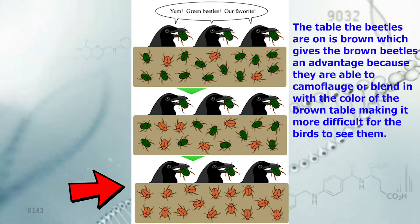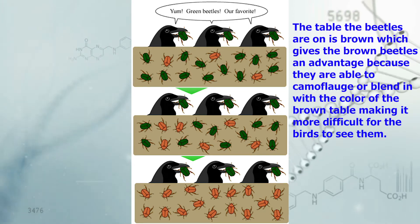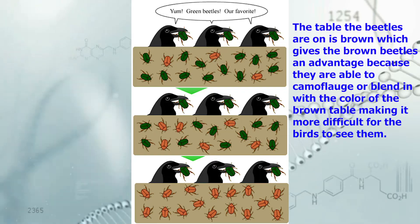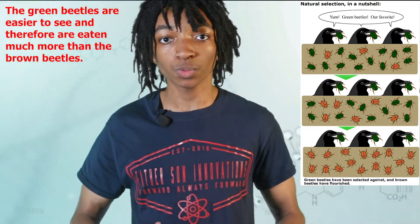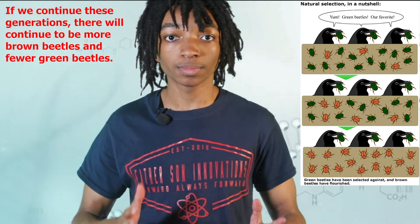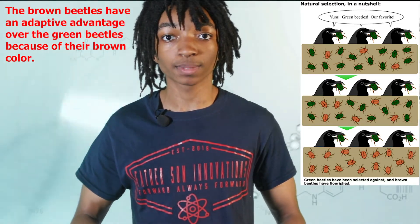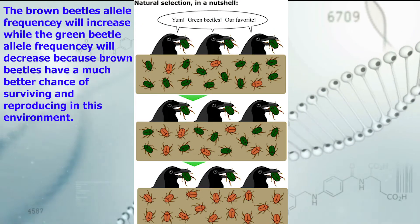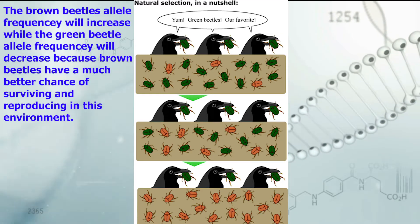One thing you may or may not have paid attention to is that the table the brown beetles are on is brown, which gives the brown beetles an advantage because they are able to camouflage or blend in with the color of the brown table, making it more difficult for the birds to see them. The green beetles are easier to see and therefore are eaten much more than the brown beetles. If we continue these generations, there will continue to be more brown beetles and fewer green beetles. The brown beetles have an adaptive advantage, and their allele frequency will increase while the green beetles' allele frequency will decrease.